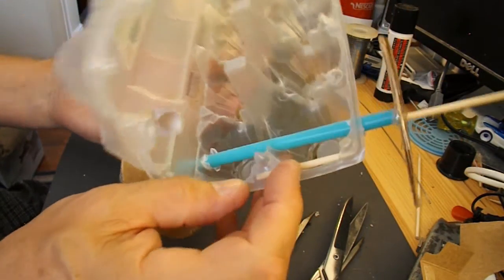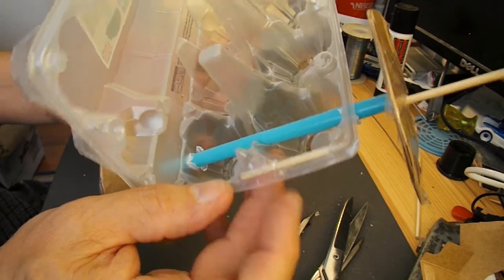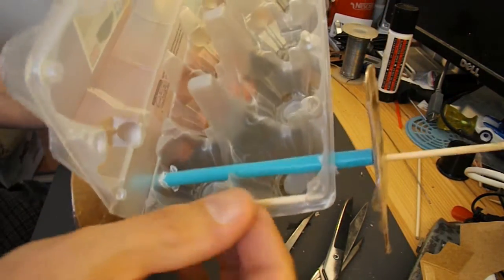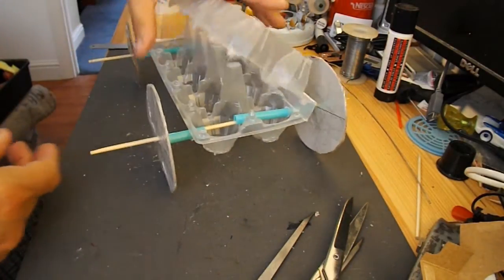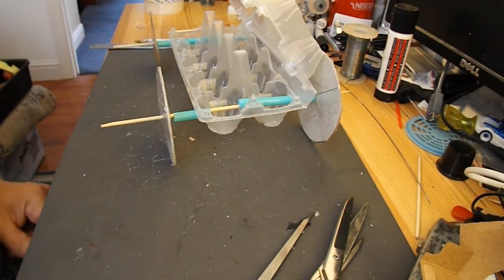I've also put a small piece of barbecue skewer just in the front there to strengthen it, so I can attach the rubber band to it. So, rubber bands next.